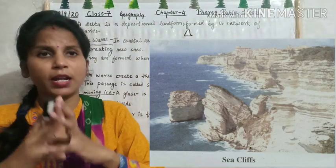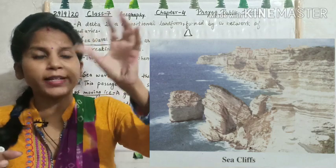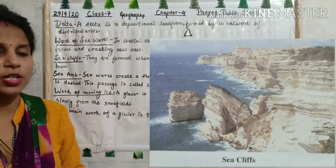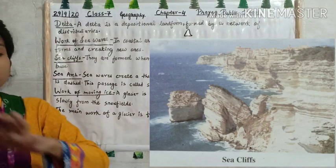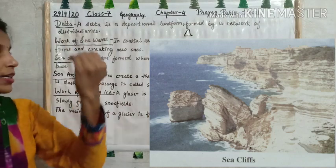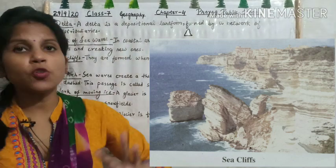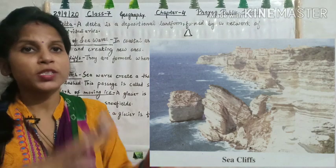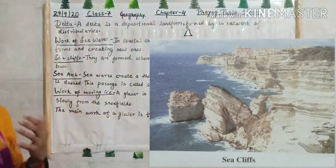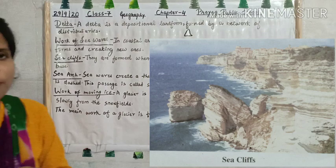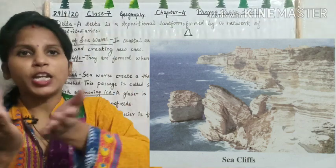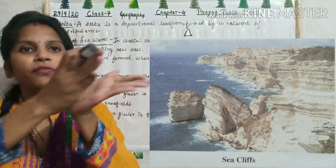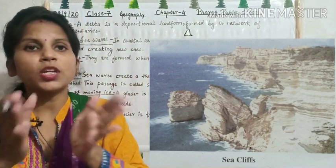Sea cliffs are formed when waves crash against a high rocky coast near the base. A cliff means a sharp, pointed rock formation. When waves crash and hit the rocky coast in the sea repeatedly, the rocks get eroded by the sea waves, and those pointed formations are what we call sea cliffs.